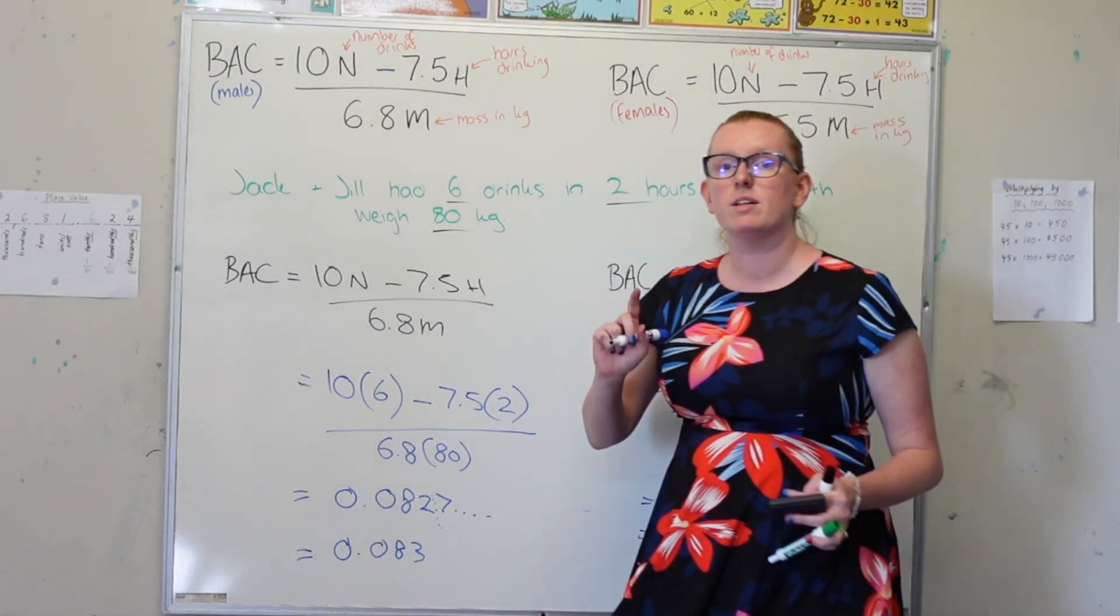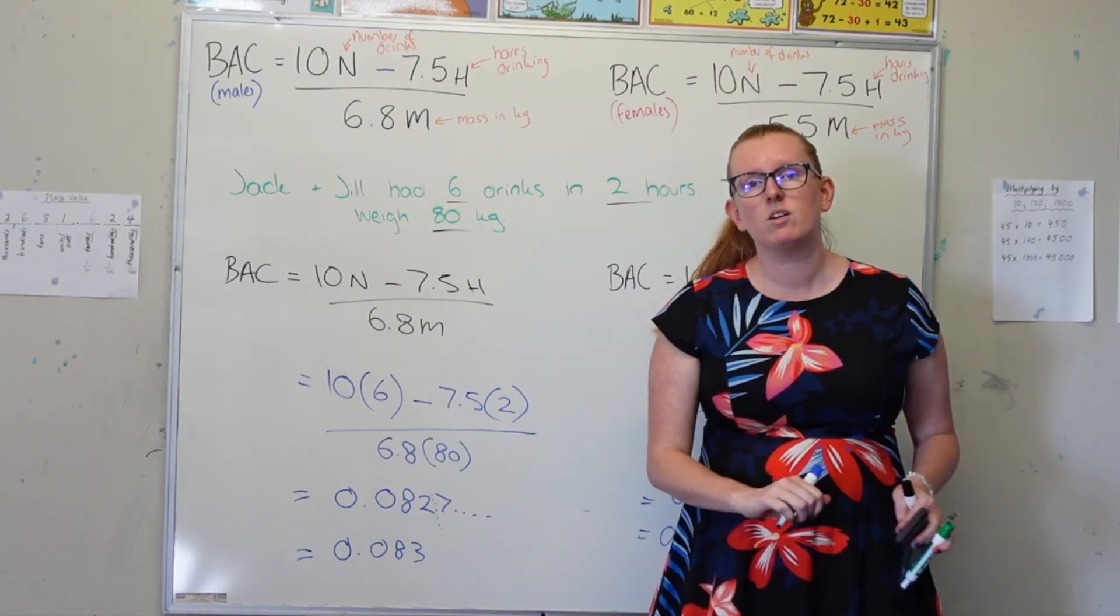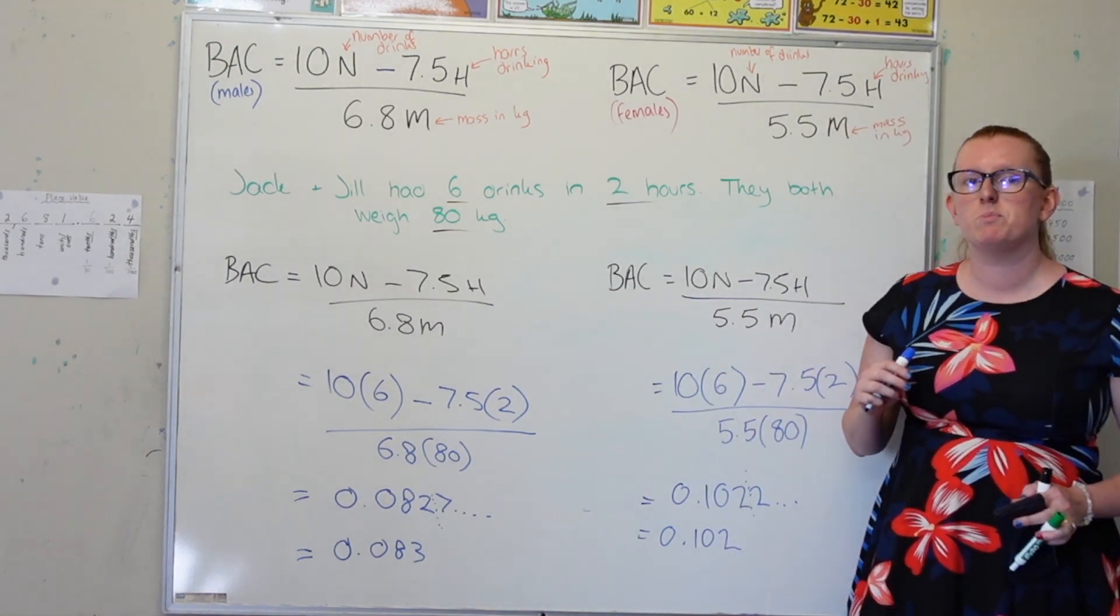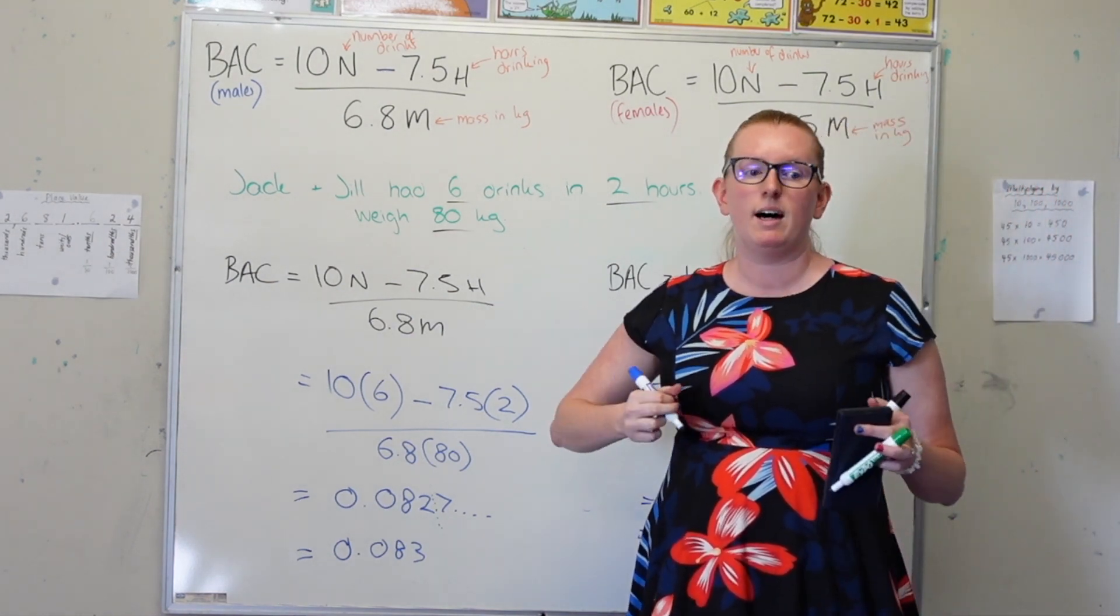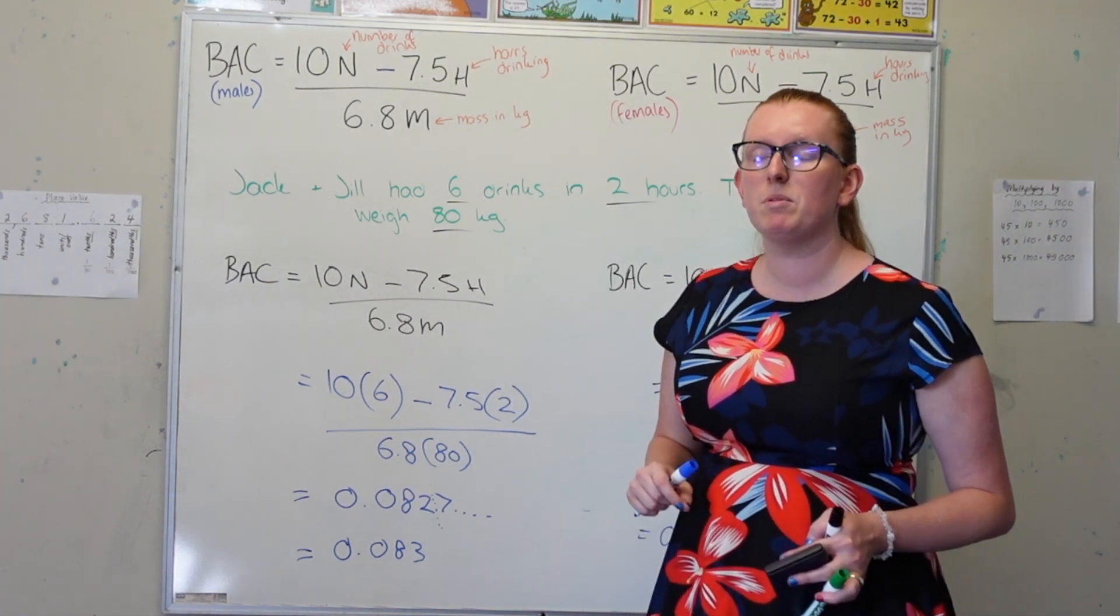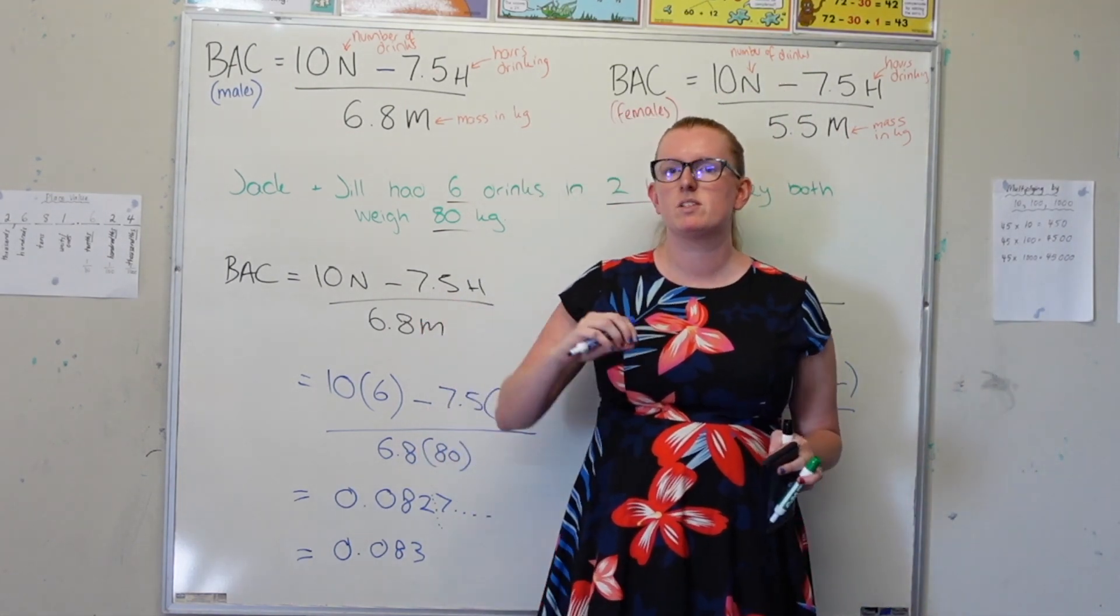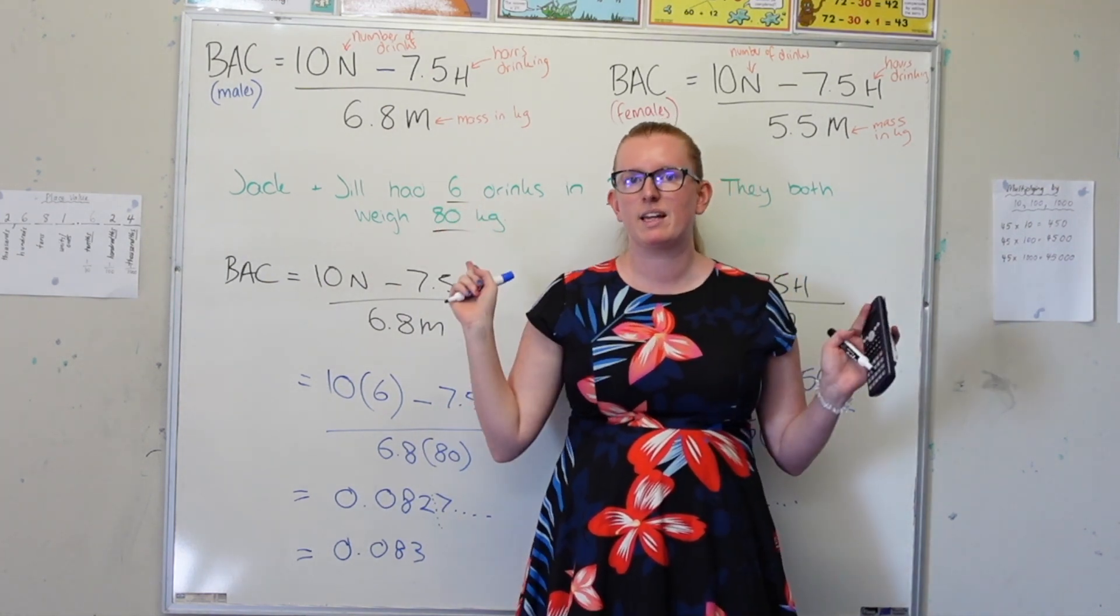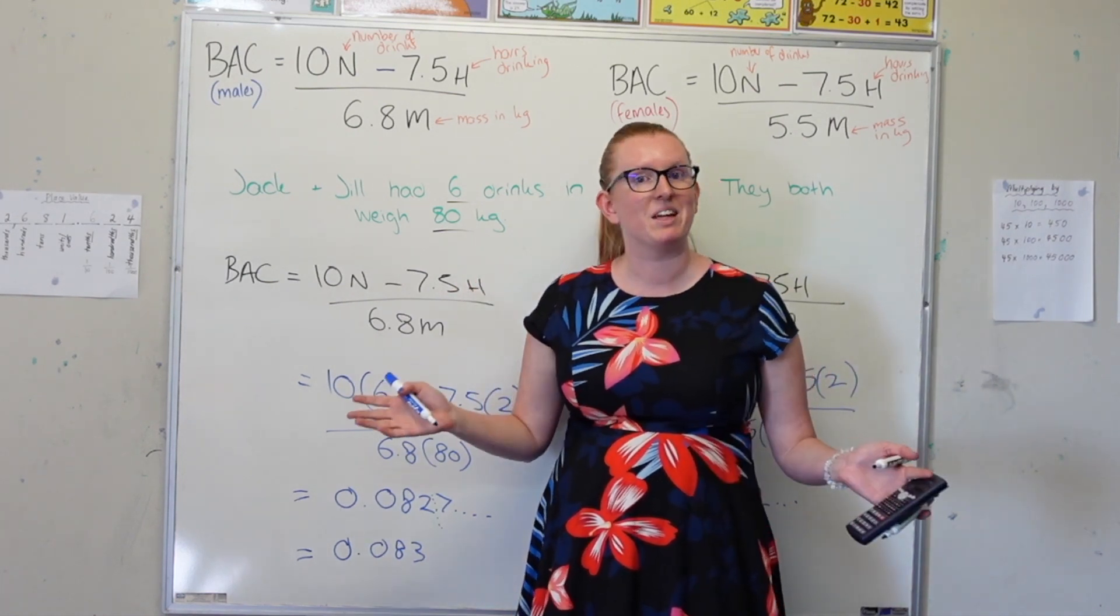So simply based on the gender that they are, Jack's blood alcohol concentration is significantly lower than Jill's. So it is very important for us to be aware of that. Now, there are actually quite a number of factors that can impact how intoxicated we become, including how much sleep you've had, how much food you've eaten, and all that sort of stuff. But purely based on our blood alcohol concentration formulas, this is how we do it. So super important to know how to calculate it and to understand it, but more importantly, making sure to never drink and drive. Thank you for watching.